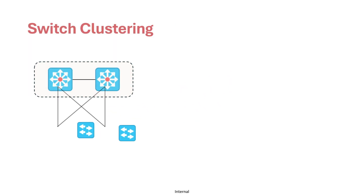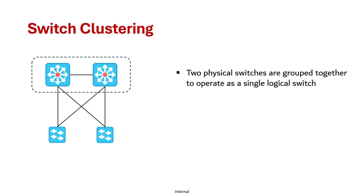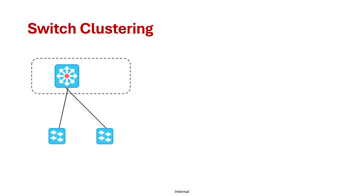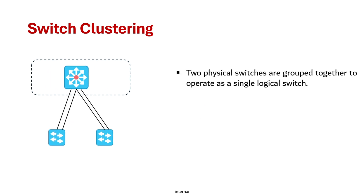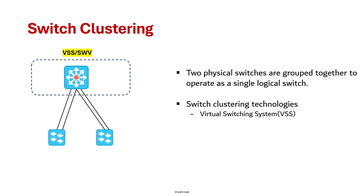Switch clustering is a network design approach where two physical switches are grouped together to operate as a single logical switch. The simplified campus design uses switch clustering technologies like VSS, also known as Virtual Switching System, and SWV, also known as StackWise Virtual. Both VSS and StackWise Virtual are network virtualizing technologies that allow two physical switches to operate as a single logical switch.